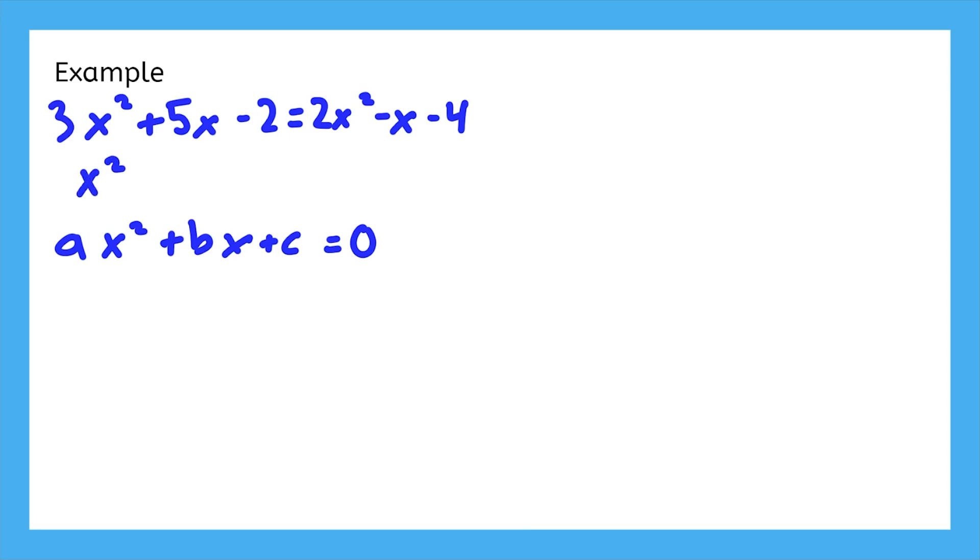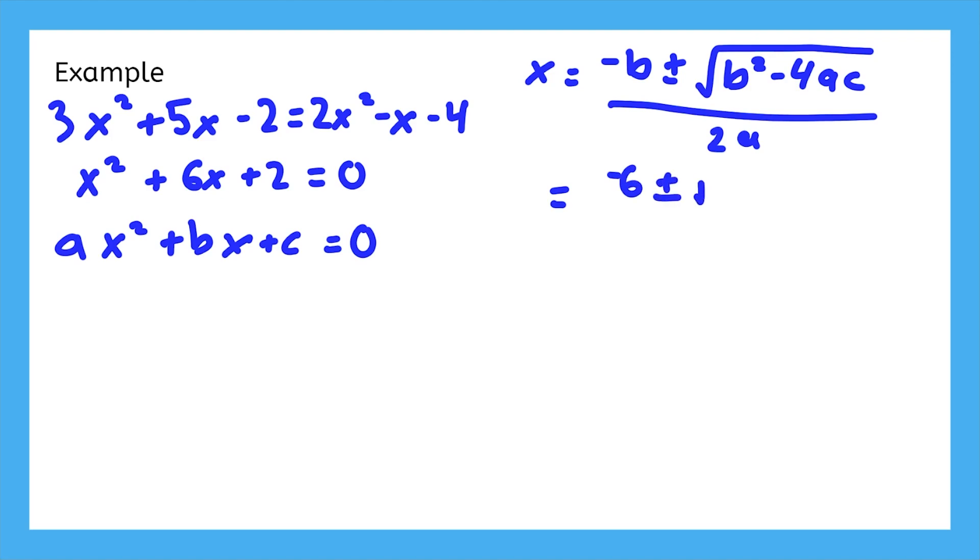So let's just subtract 2x squared from both sides, add 1x, and add 4 to zero out the right side. Now, it's ready for the quadratic formula. a is 1, b is 6, and c is 2.